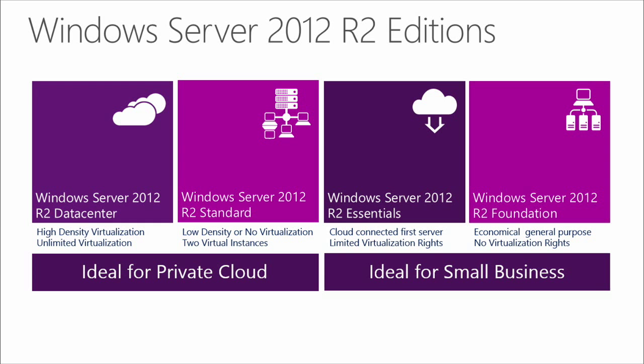Windows Server 2012 R2 Essentials is a cloud-connected first server ideal for small businesses with up to 25 users, providing customers with the flexibility to have email in the cloud, runtime of business applications, or run email on-premises. The licensing for Essentials continues to be a server model with no CAL requirements. Windows Server 2012 R2 Foundation is an economical, general-purpose server for physical computing environments only, providing a Windows Server experience for up to 15 users, with a server model license and no CAL requirements.